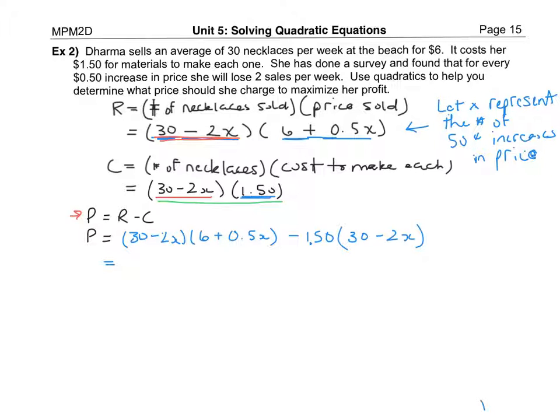All right, now if I expand through the brackets, I'm going to multiply the first two brackets together. Three groups of 6 is 18 so that'll be 180 and then 0.5 a half of 30 so multiplying the 30 with the 0.5 I should have a plus 15x and then we're going to have the minus 2 multiplying both terms so minus 2 times positive 6 would be minus 12x and then a minus 2 times 0.5 or a half of 2 would be negative 1x squared or negative x squared.